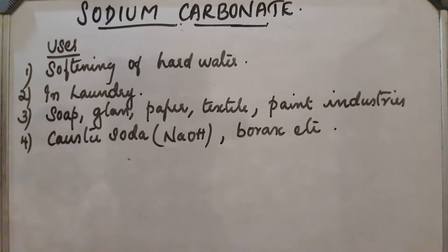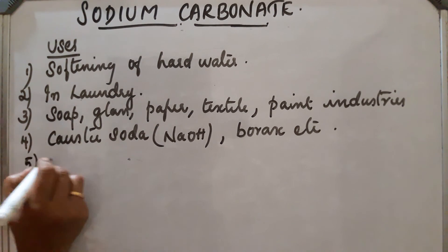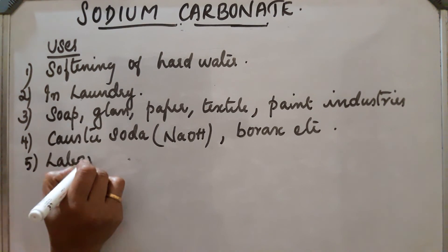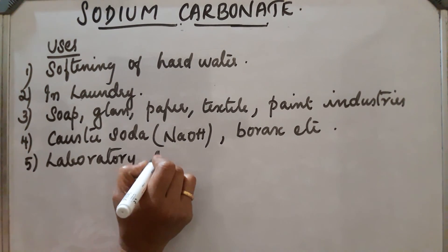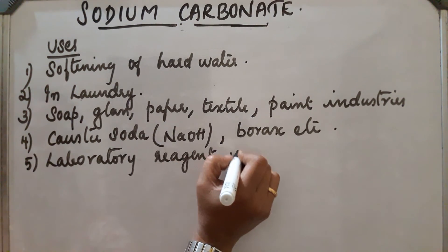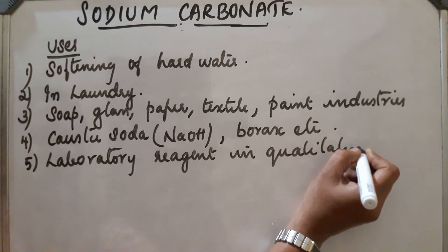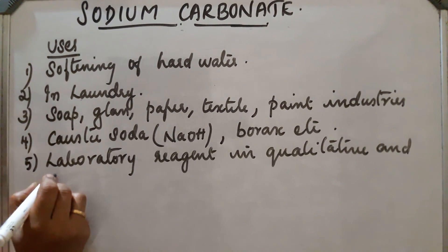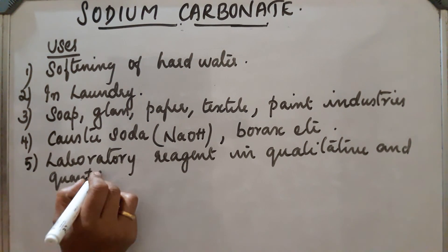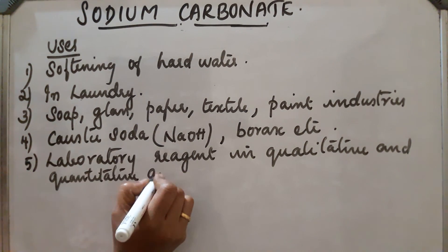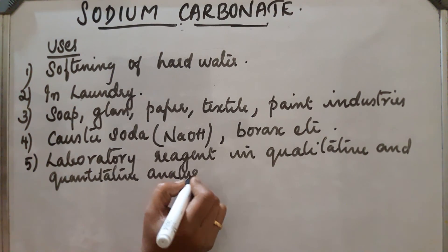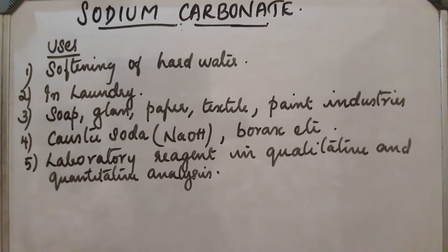Sodium carbonate is used for the manufacture of caustic soda and borax. It is also used as a laboratory reagent in both qualitative and quantitative analysis. These are the main uses of sodium carbonate.